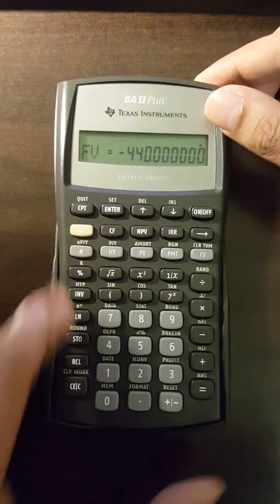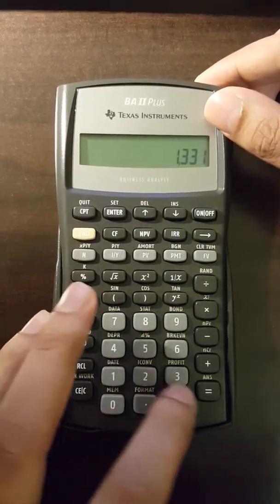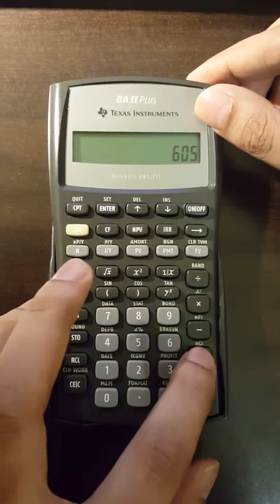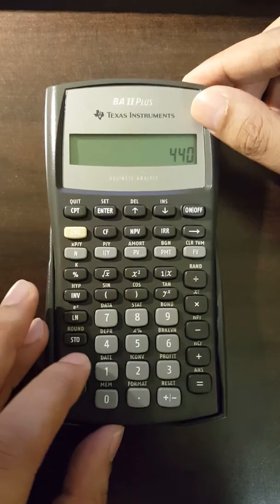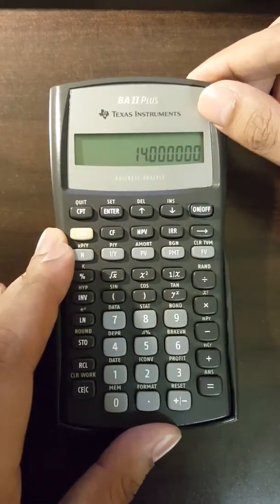So total future value is negative 1331 plus 605 plus 440 plus 300, which comes out to be 14.